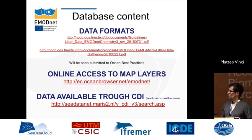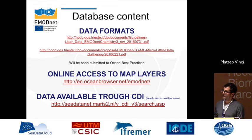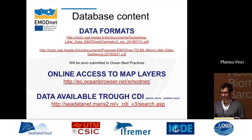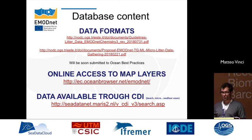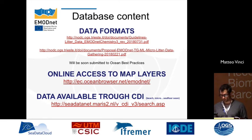The data formats used to collect litter information are available on our website at the highlighted links and will soon be submitted to Ocean Best Practices as discussed in recent days. There is the chance to access map layers online through our viewing service Ocean Browser, and data are available through the CDI service for beach and micro litter, with sea floor coming soon.